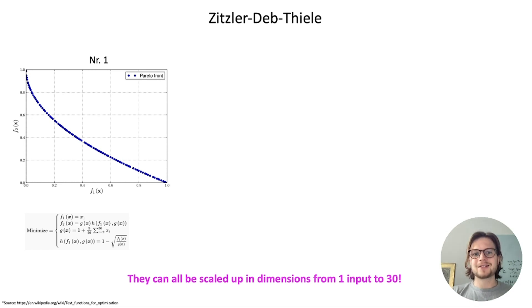And the Pareto front remains the same. So you can perfectly test your algorithm how good it scales when you go up in dimensions for example. On the left side now here you see the first function which I really like, it's called Zitzler-Deb-Thiele number one which has a convex shape like this continuous.